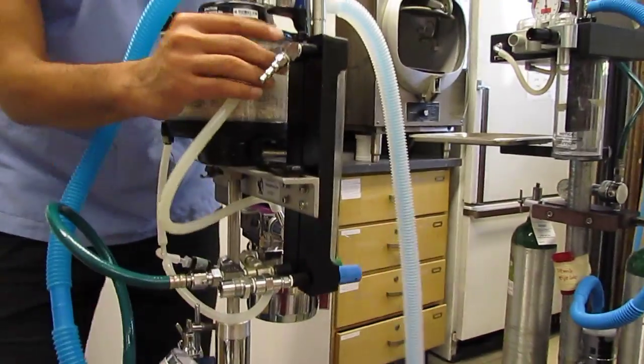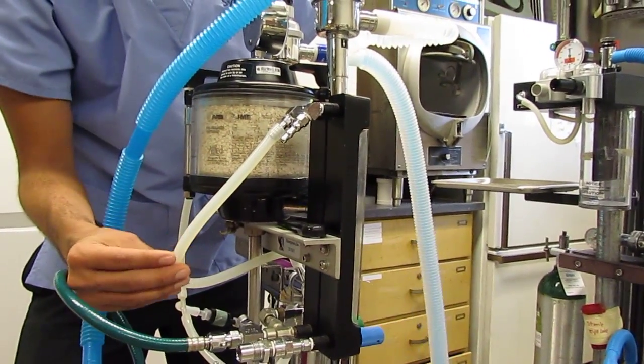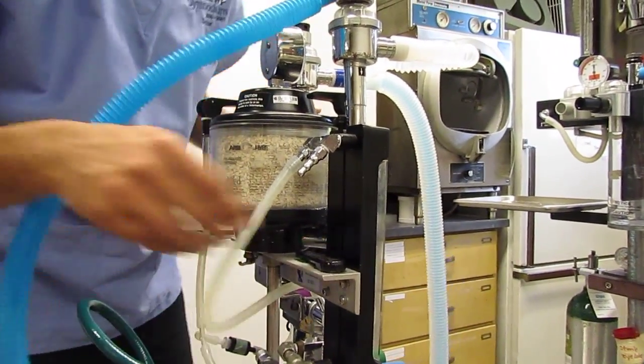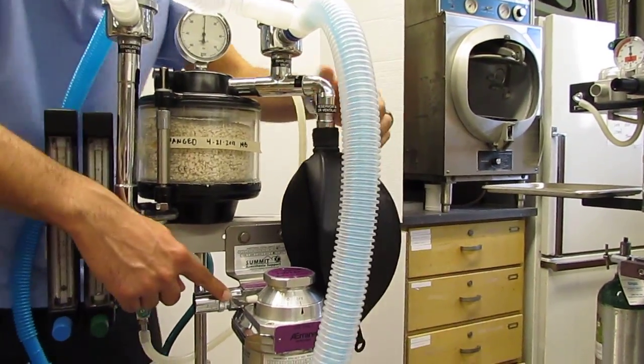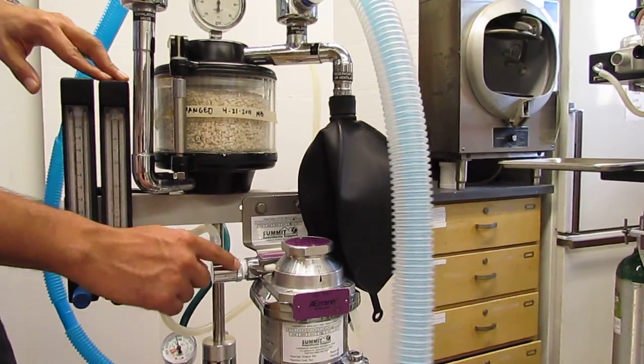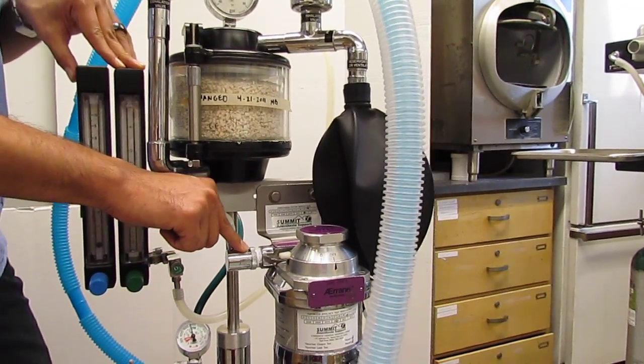So if I go up to the top of the flow meter and out the back, I go through this hose here. This hose goes back to the front right here and into the vaporizer inlet. Now,